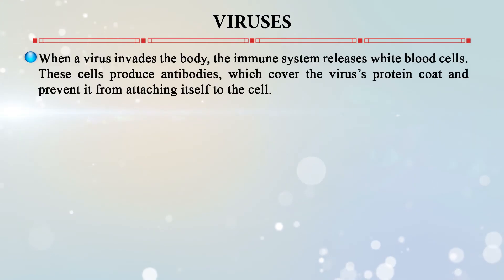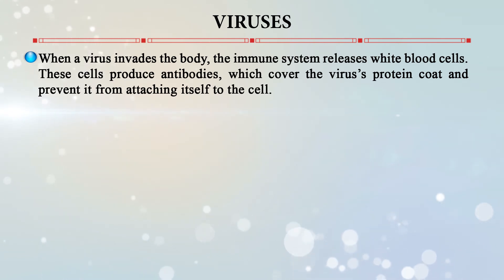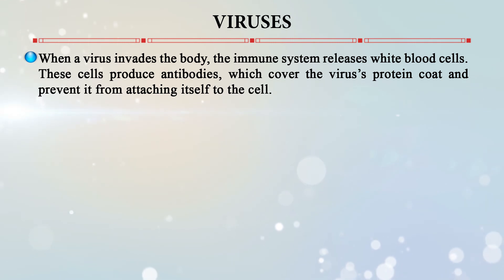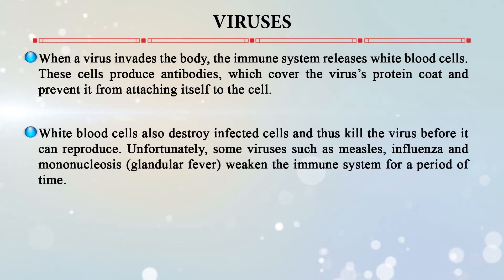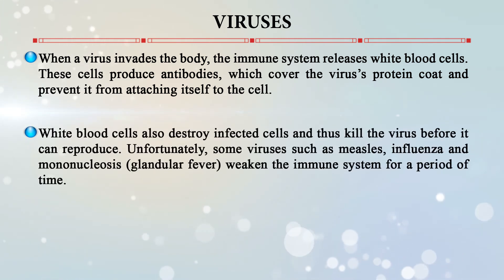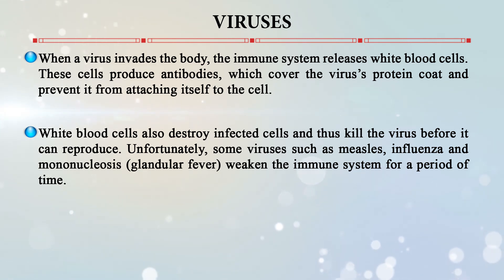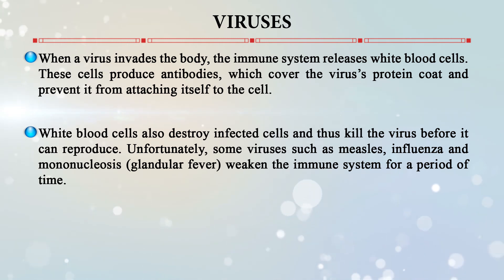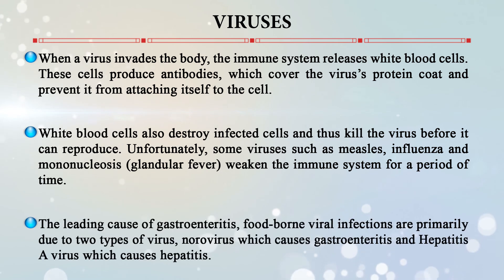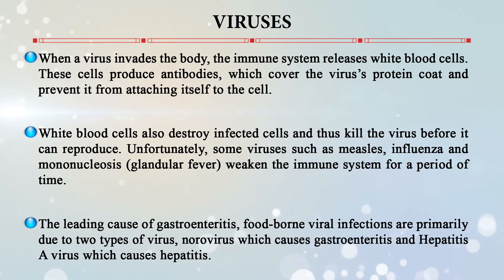The eyes, nose, and mouth must be covered because they lack a protective skin layer. When a virus invades the body, the immune system releases white blood cells that produce antibodies, which cover the virus protein coat and prevent it from attaching to cells. White blood cells also destroy infected cells and can kill the virus before it reproduces. Unfortunately, some viruses like measles and influenza can weaken the immune system for a period of time. Viruses are a leading cause of foodborne infections, gastroenteritis, and hepatitis A, B, and C.